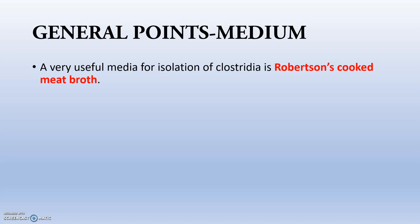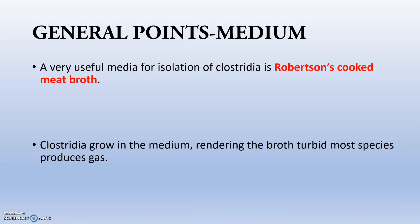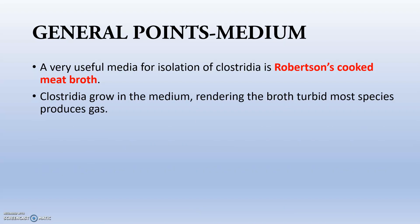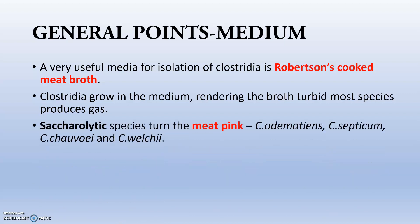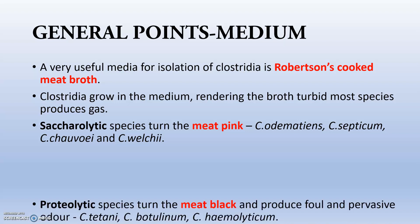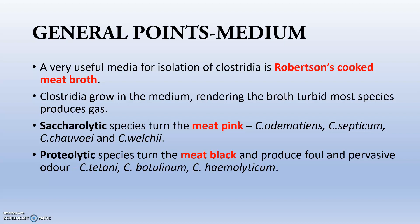Clostridia grow in the medium, rendering the broth turbid, and most species produce gas. Two groups differ in how they change Robertson's cooked meat broth: saccharolytic species turn the broth pink — these include Clostridium oedematiens, Clostridium chauvoei, and Clostridium welchii — while proteolytic species turn the broth black with a foul, pervasive odor. Proteolytic species include Clostridium tetani, Clostridium botulinum, and Clostridium haemolyticum.